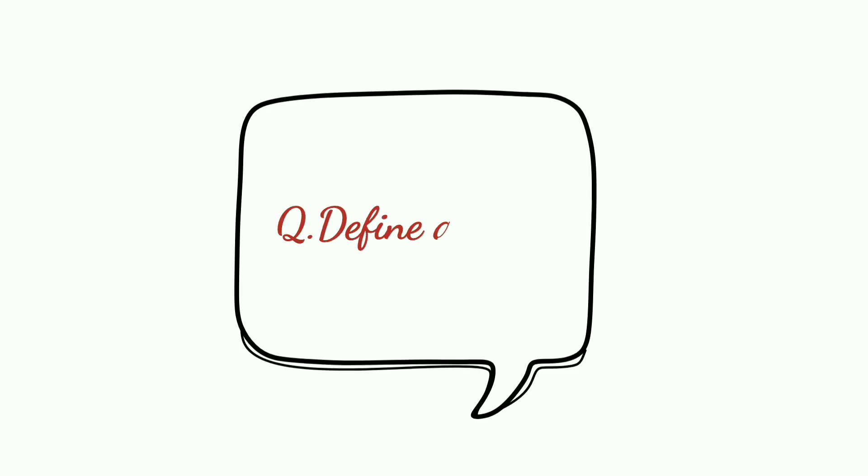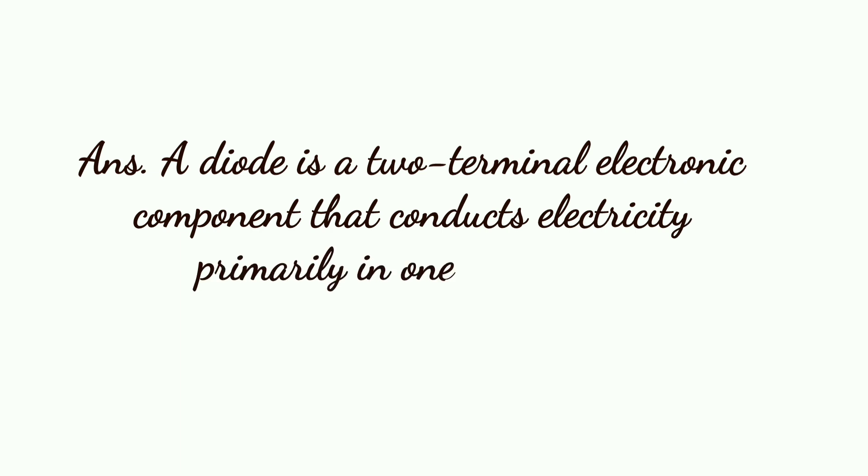Question: Define Diode. A diode is a two-terminal electronic component that conducts electricity primarily in one direction.